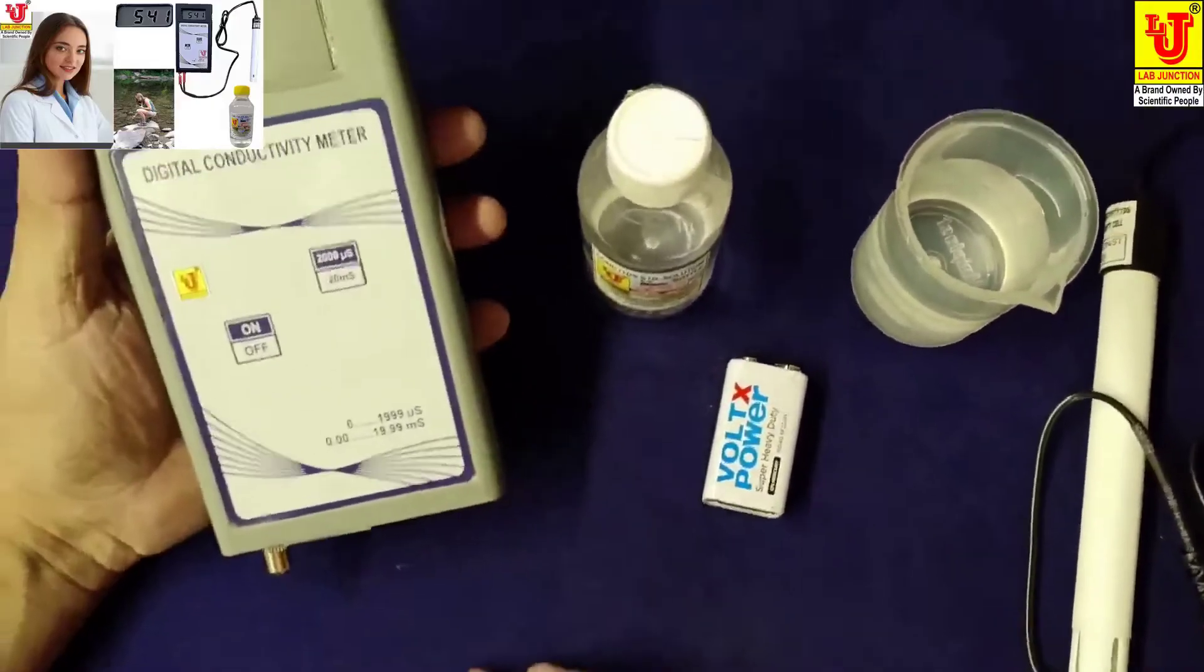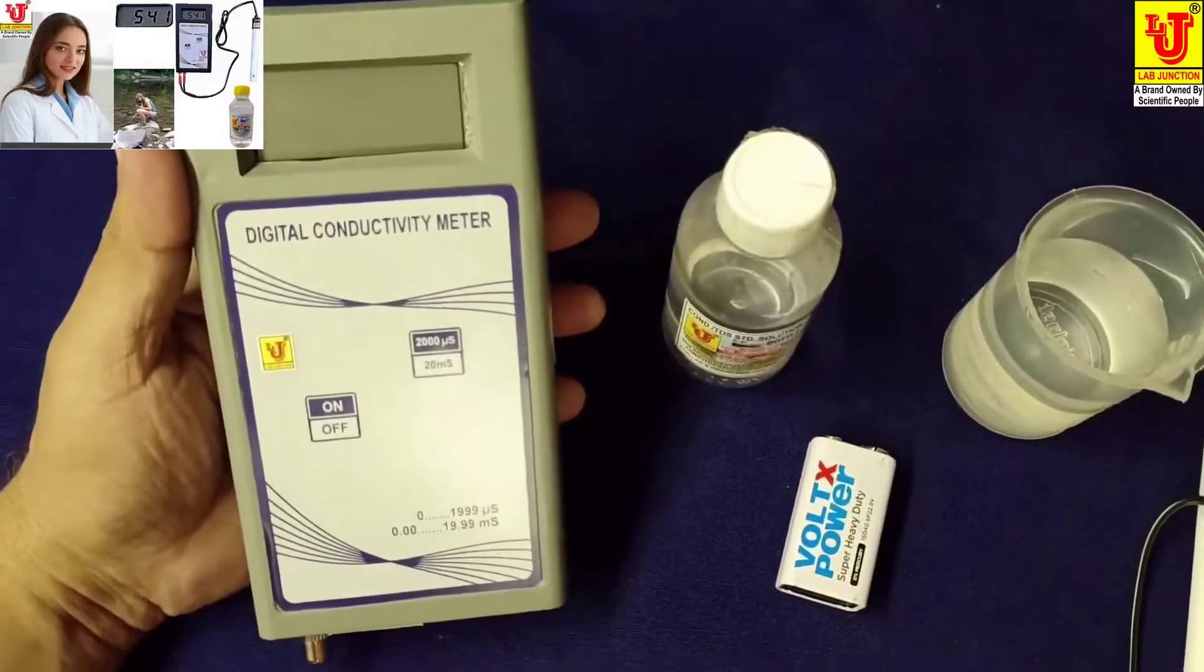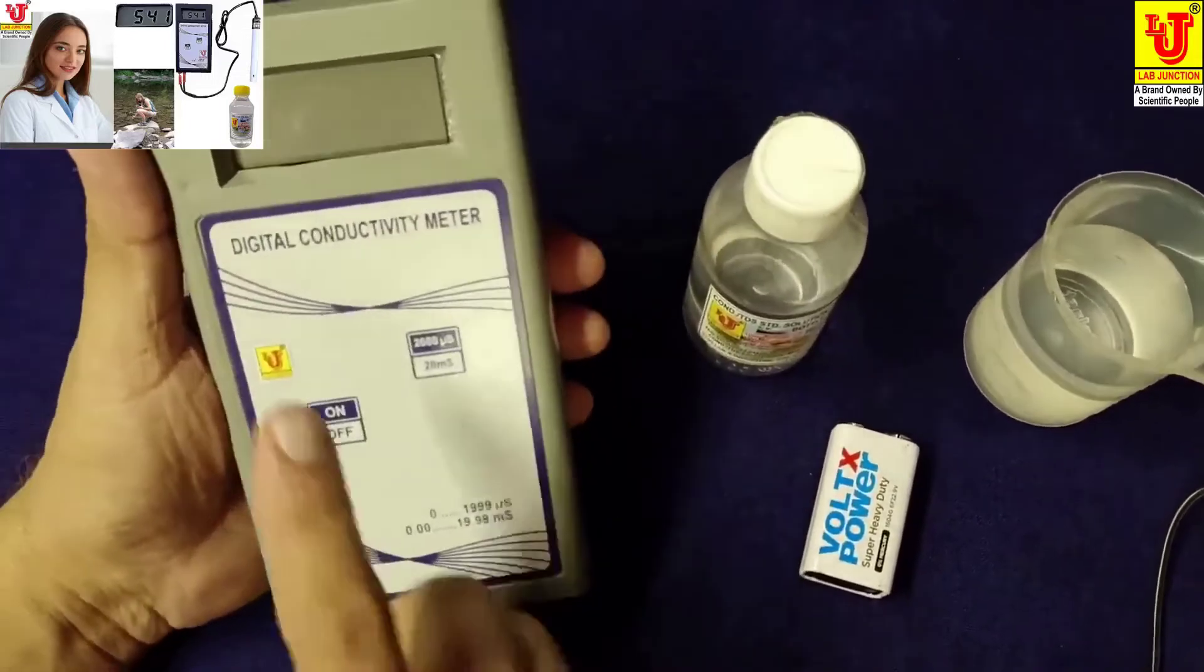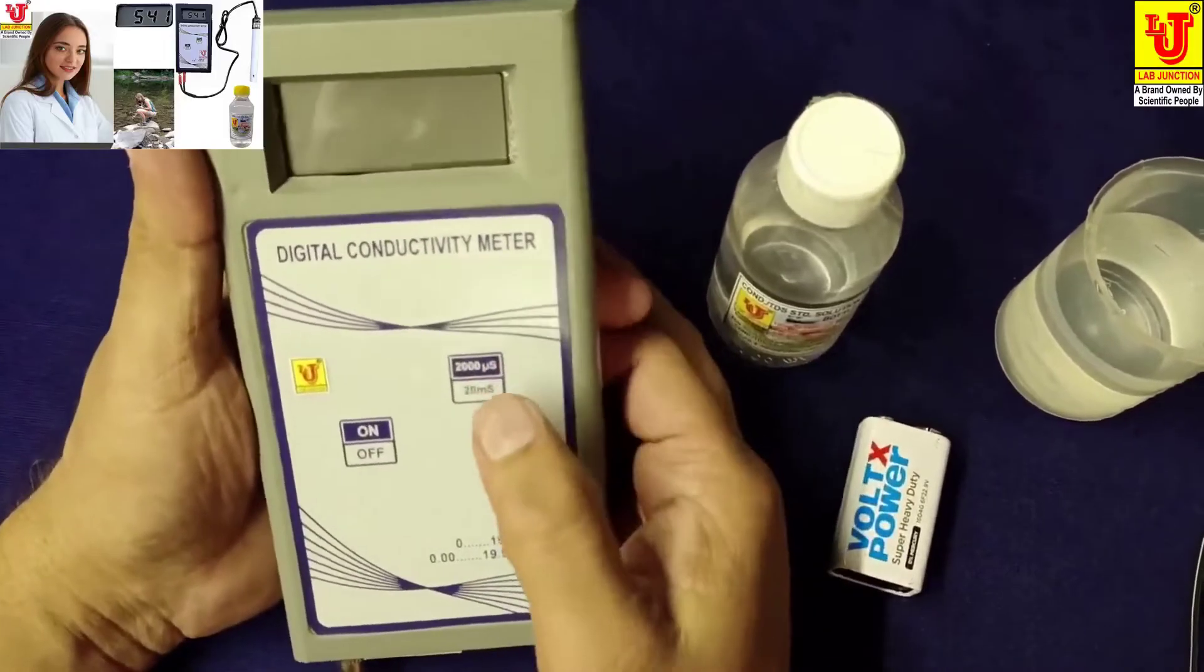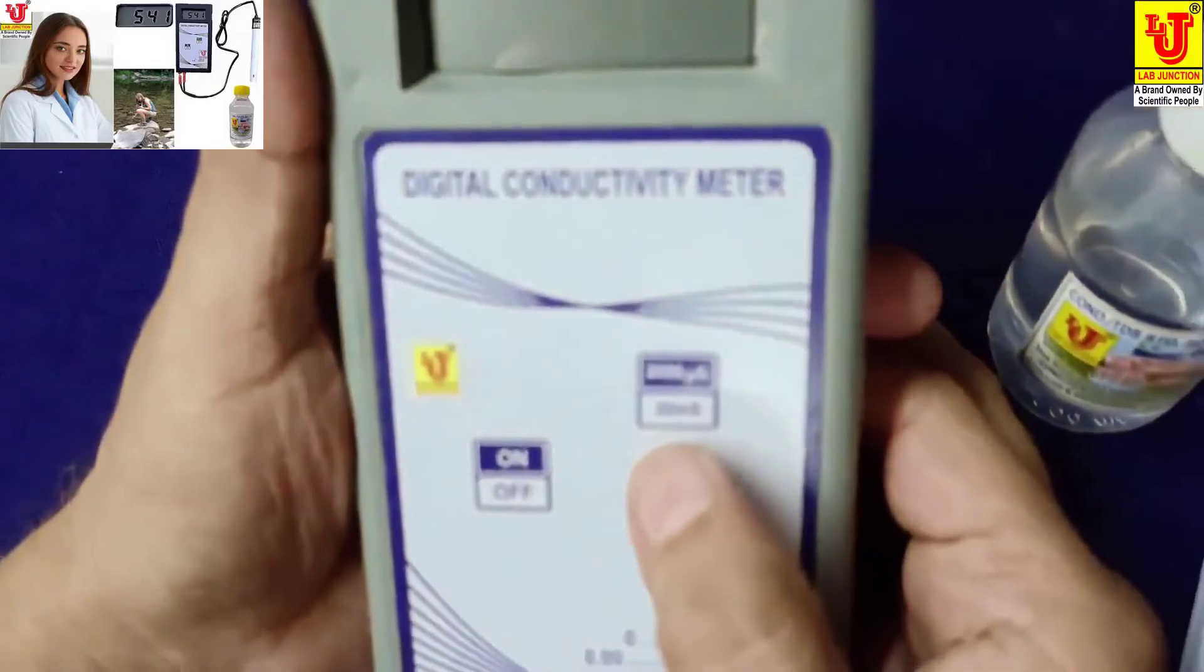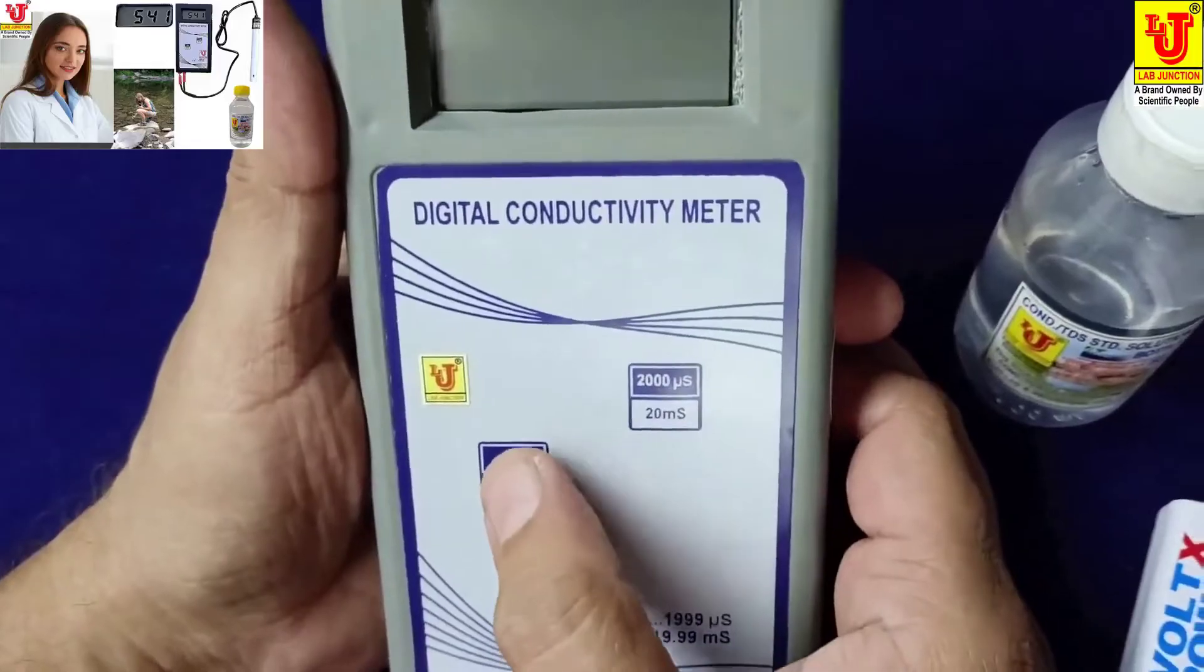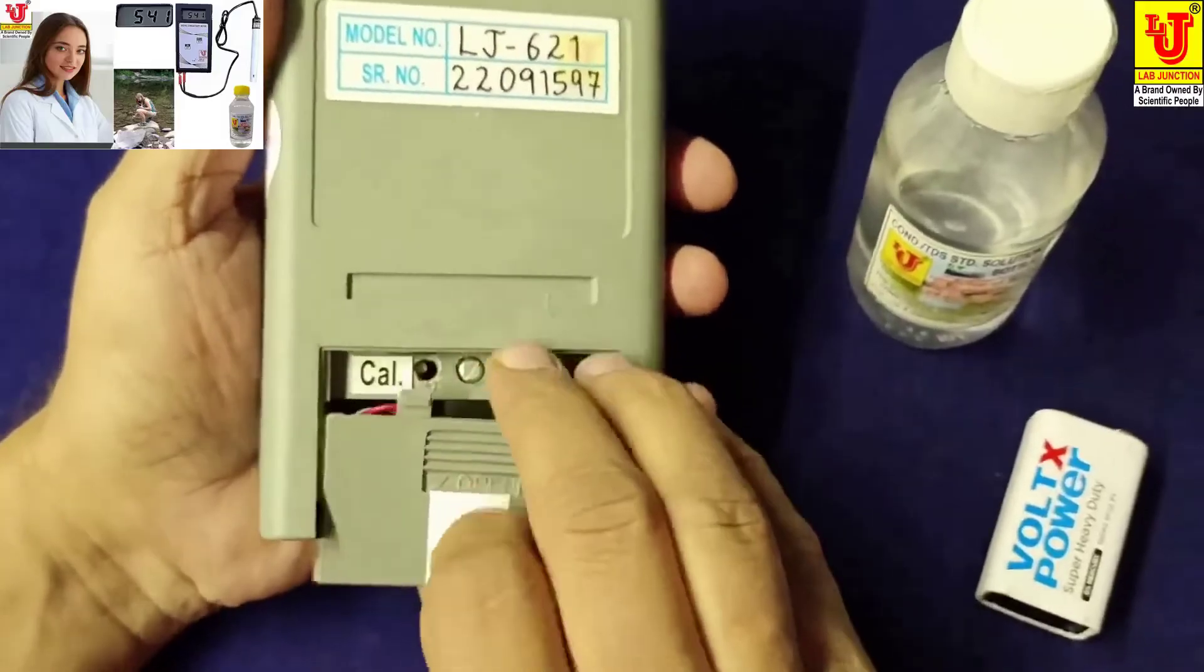Now this is our main instrument, front view, back view. In the front view this is the display. This is the range switch. In this, two ranges are there: 20 millisiemens and 2000 microsiemens. This is on-off control. In the back side this is the battery compartment.